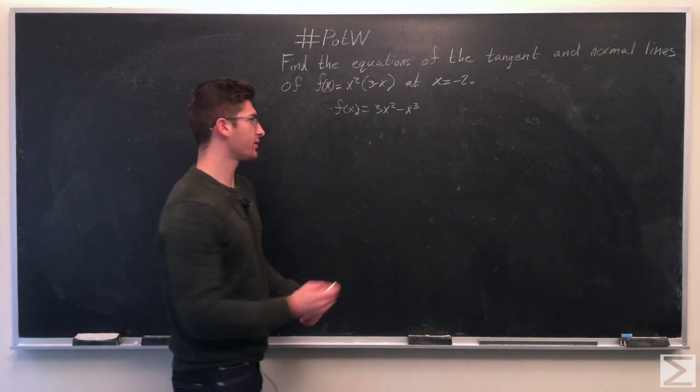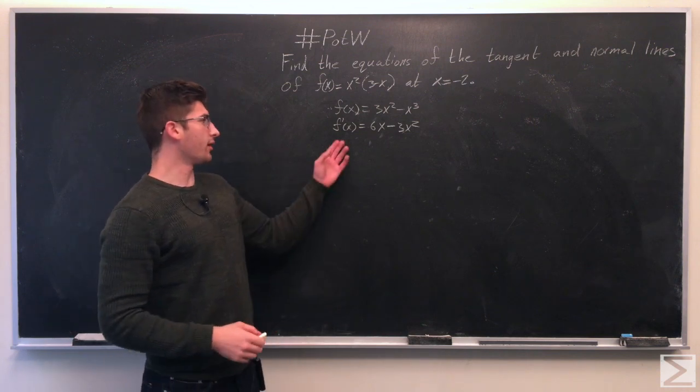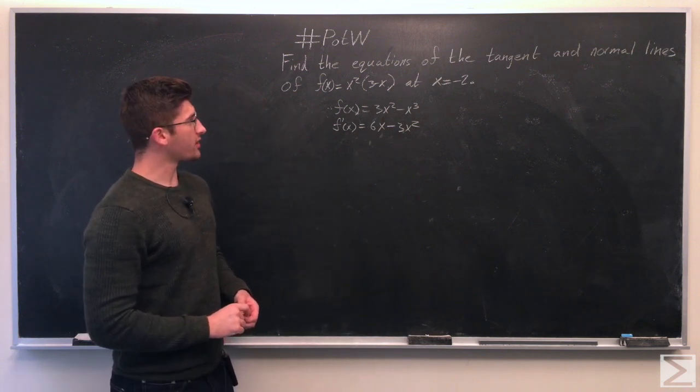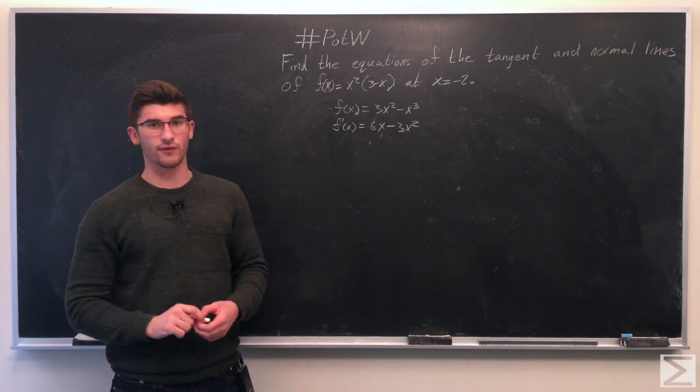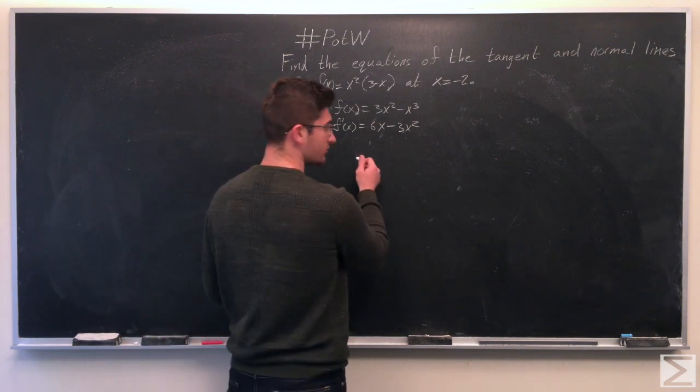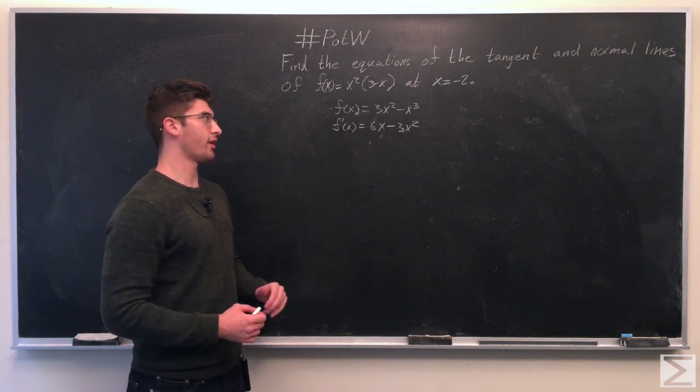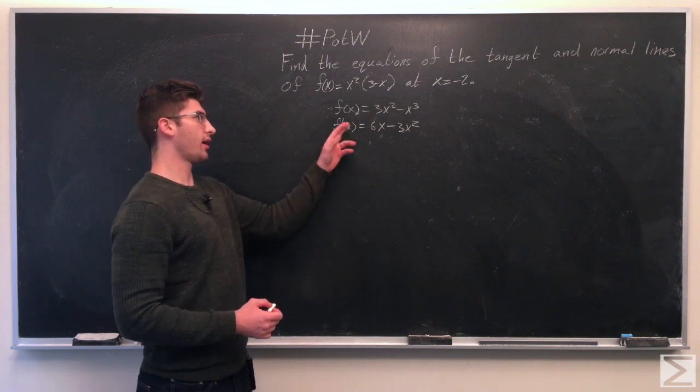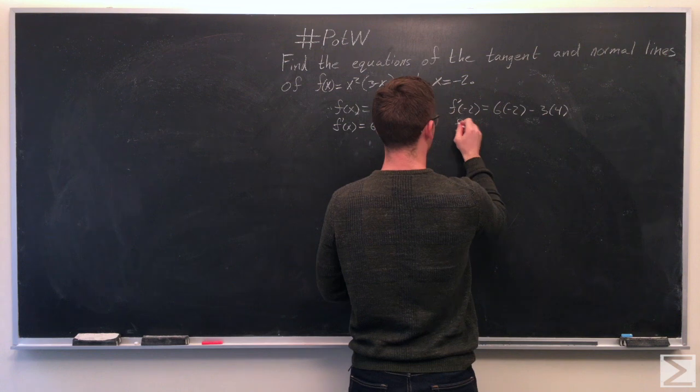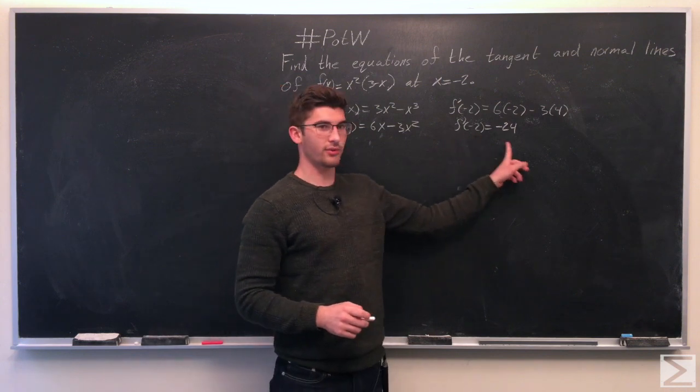So now let's go ahead and find f prime of x. So we get f prime of x equals 6x minus 3x squared. So we just need to plug in x equals negative 2 into f prime of x to find the value of our slope at negative 2. So when we do that, we get f prime of negative 2 equals negative 24.